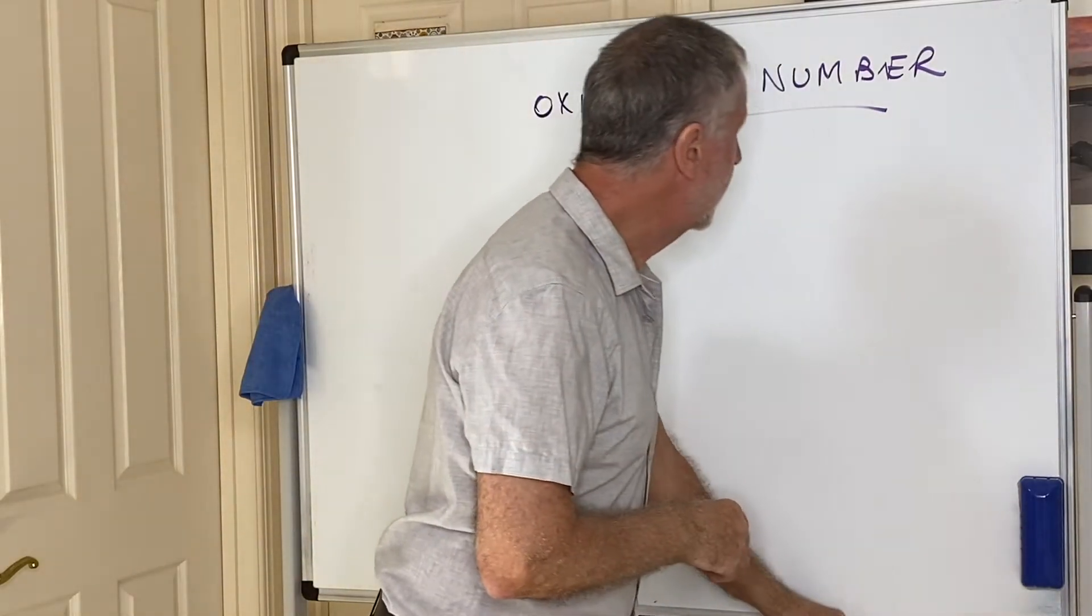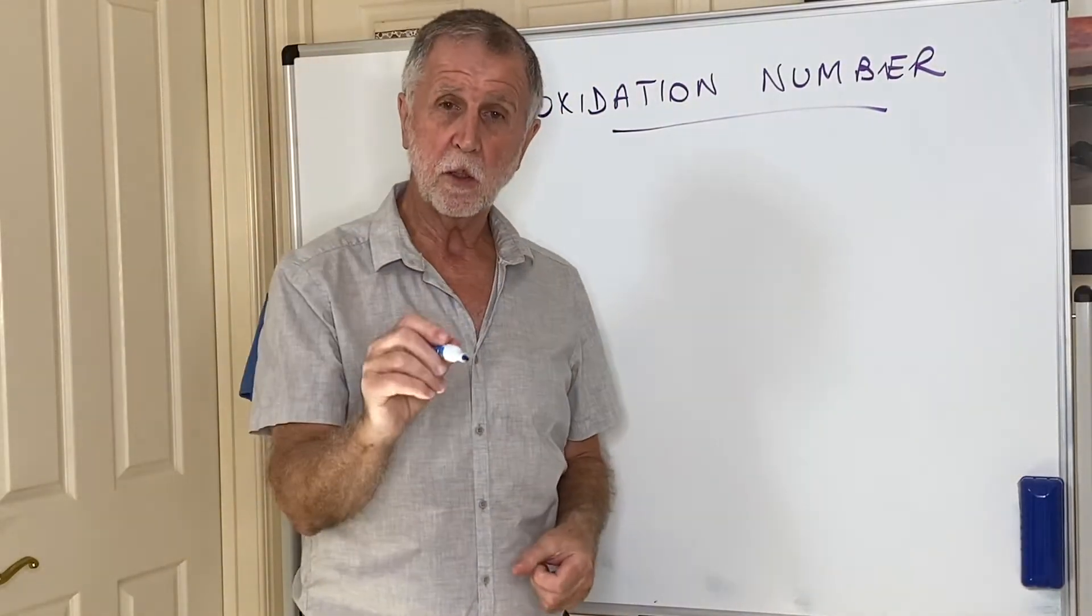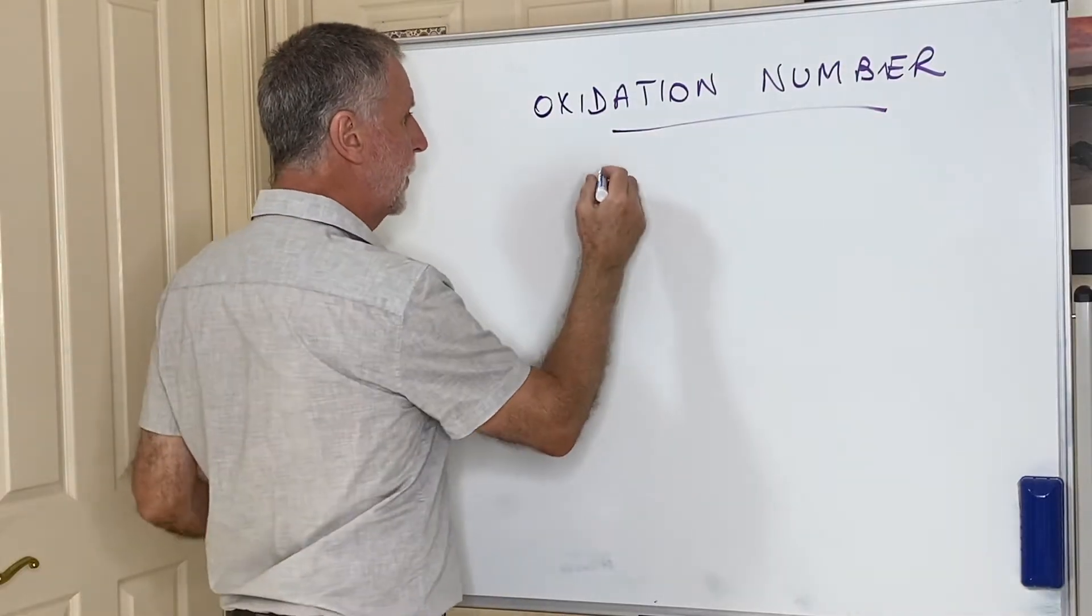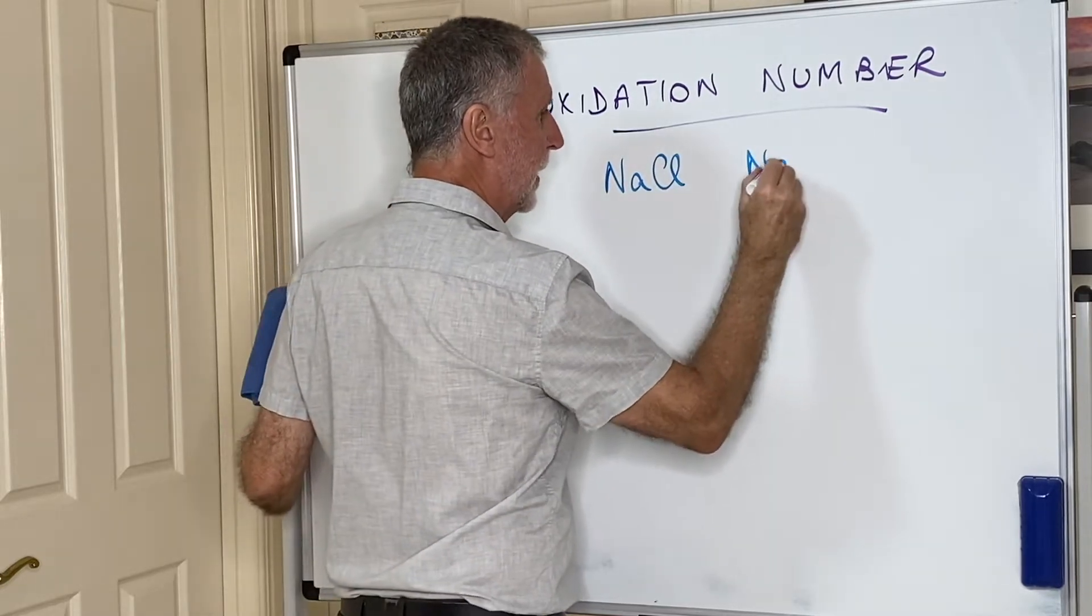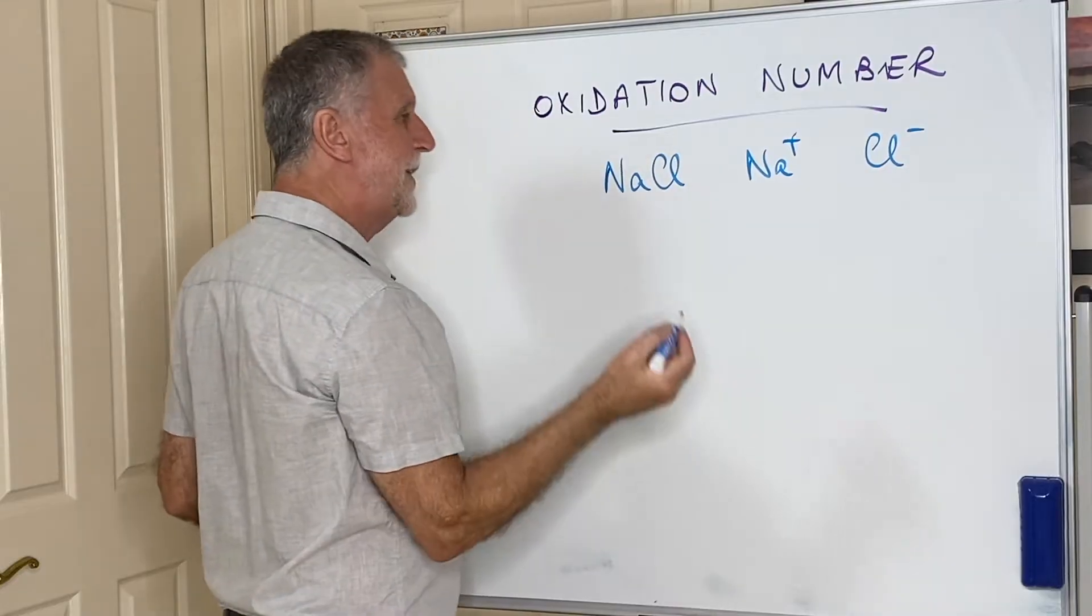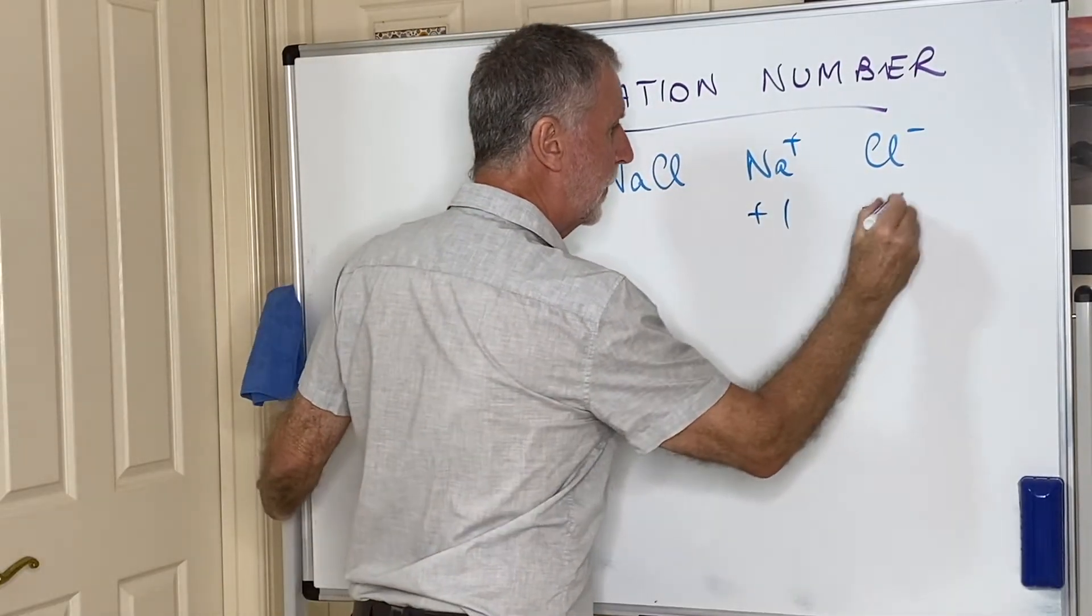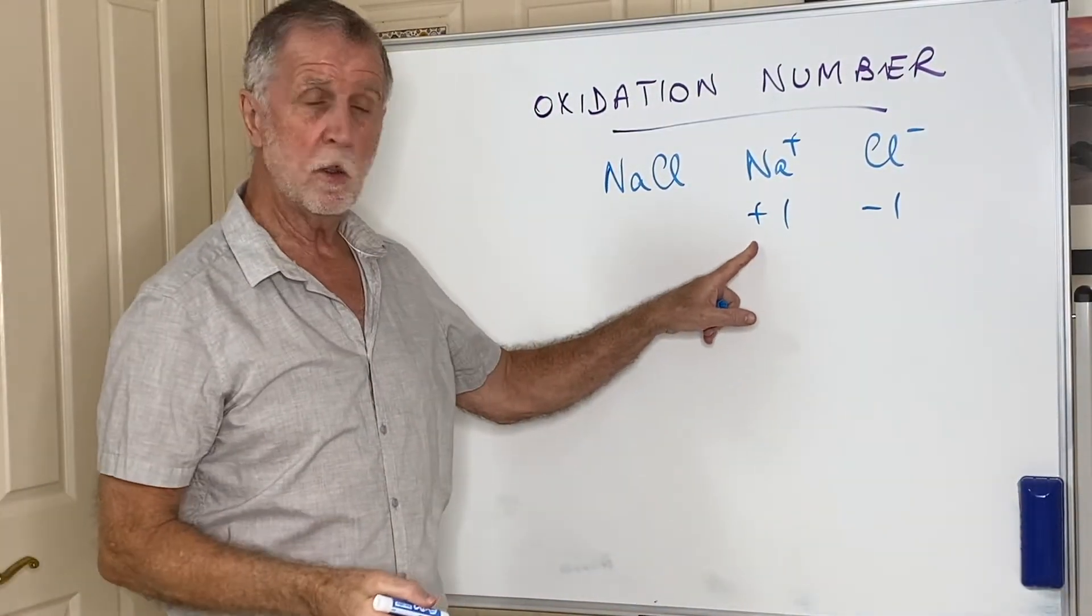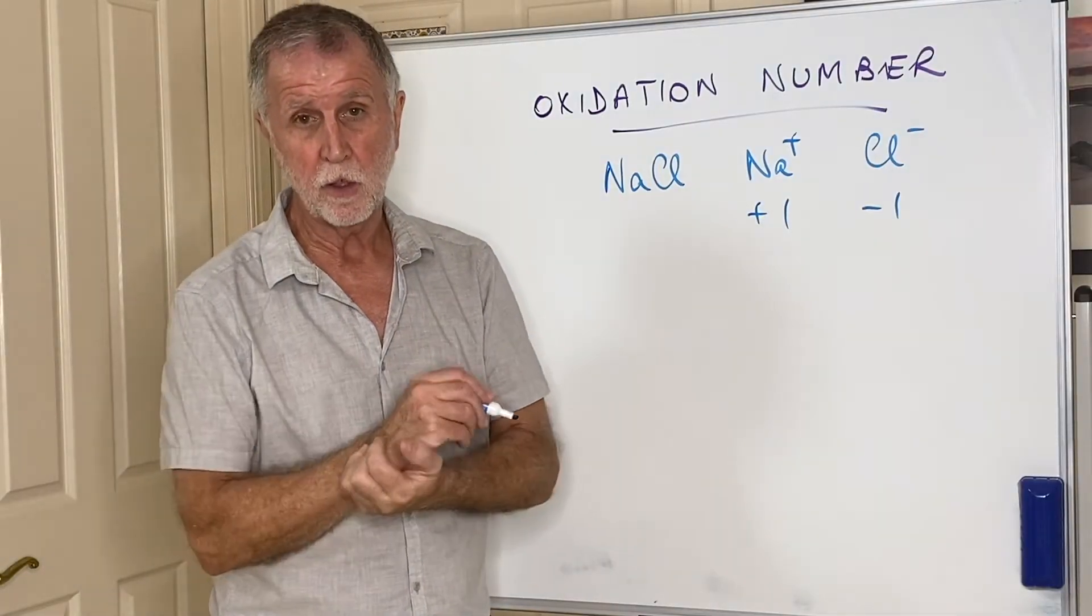How to work out the oxidation number? Well, oxidation number works for ionics and covalents. Ionics are easy. If you have, for example, an ionic like sodium chloride, the sodium is present as Na+ and the chlorine as Cl-. We say that the oxidation numbers are +1 and -1. In other words, the oxidation number of an element in an ionic compound is simply the charge on that ion.